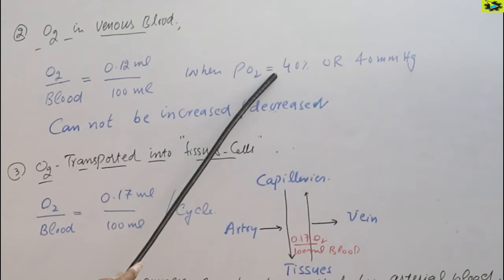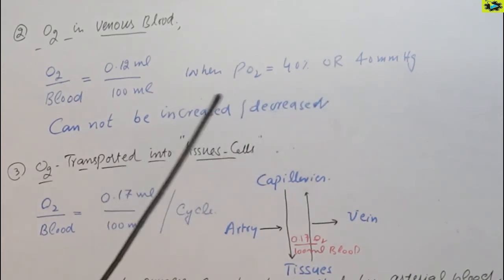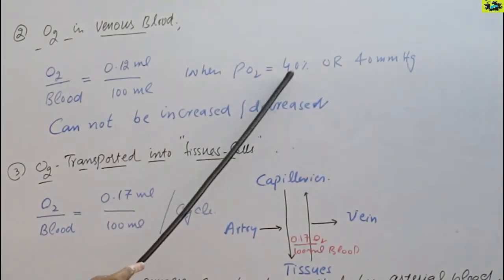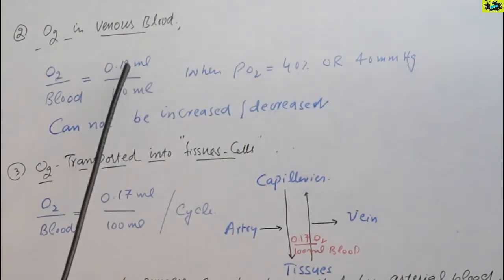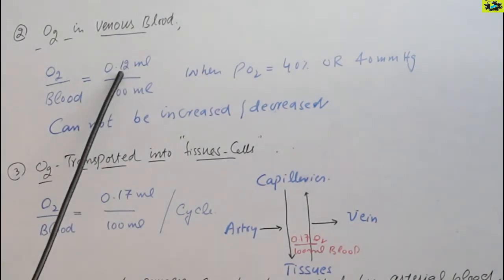When partial pressure is about 40 mm of mercury, if we increase this value to 50, 60, 70, 80 mm of mercury, this value can be changed, but it cannot be increased or decreased normally.